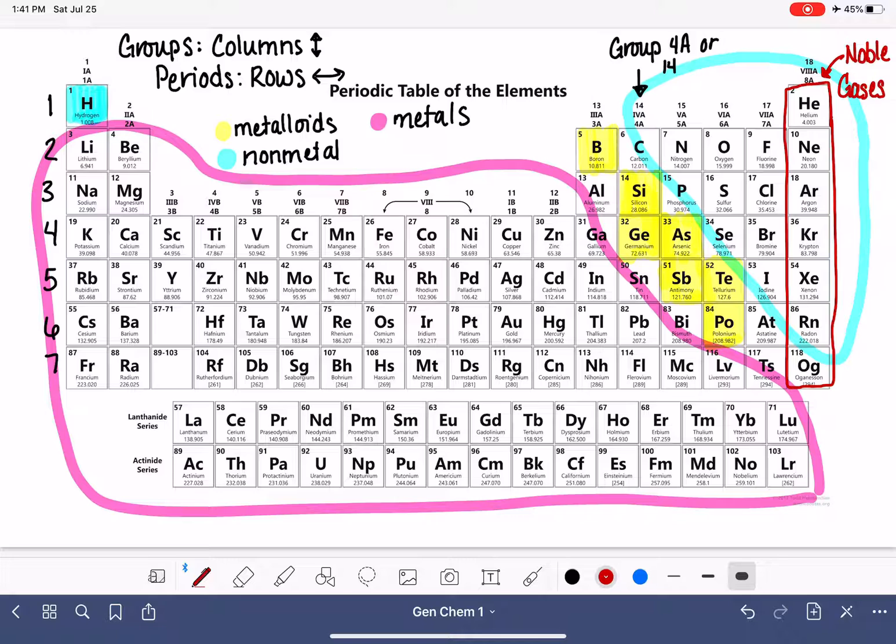And then just to the left of that, these elements right here, these elements are in group 7A, these are the halogens.